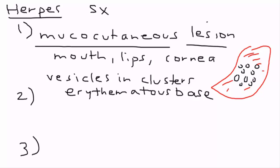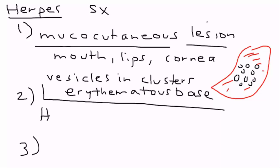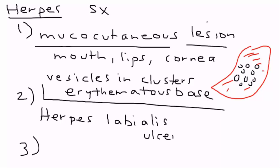The second type of herpes presentation is herpes labialis. There isn't a huge difference from the first type — it's just given a different name. It resembles an ulcer or a cold sore and normally appears on the lip along the vermilion border, the area where a woman would apply lipstick.